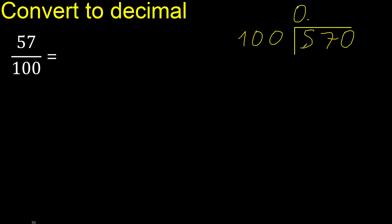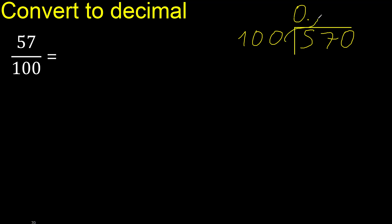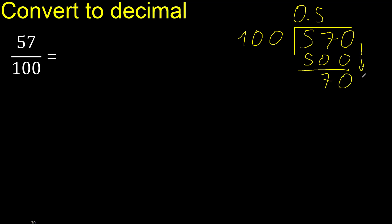Here, 0 point is not less. 100 multiplied by which number is nearest to 570 but not greater? Multiplied by 8 is 800 — is greater. Multiplied by 6 is 600 — is greater. Multiplied by 5 is 500 — ok, is not greater. Subtract 70. There is no number that goes down, therefore complete — always complete with 0. Point only once.